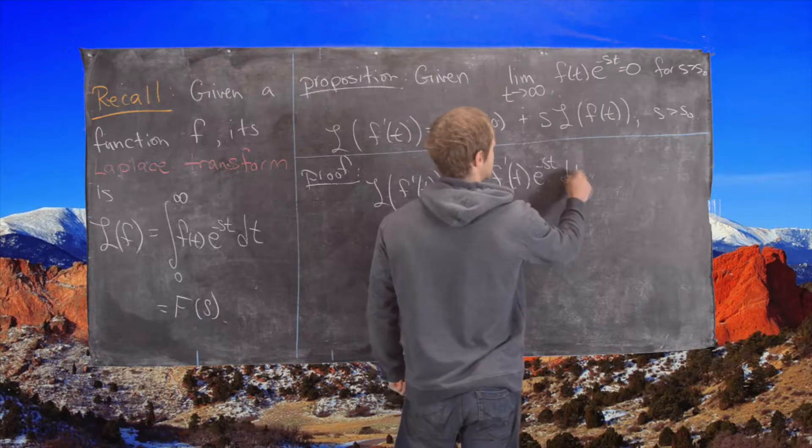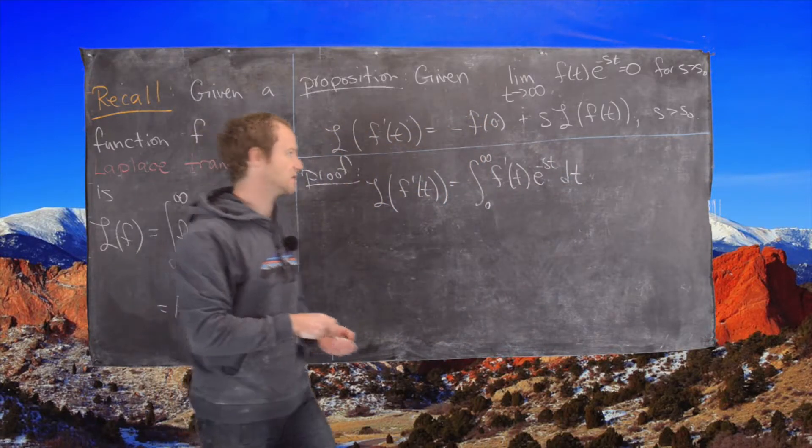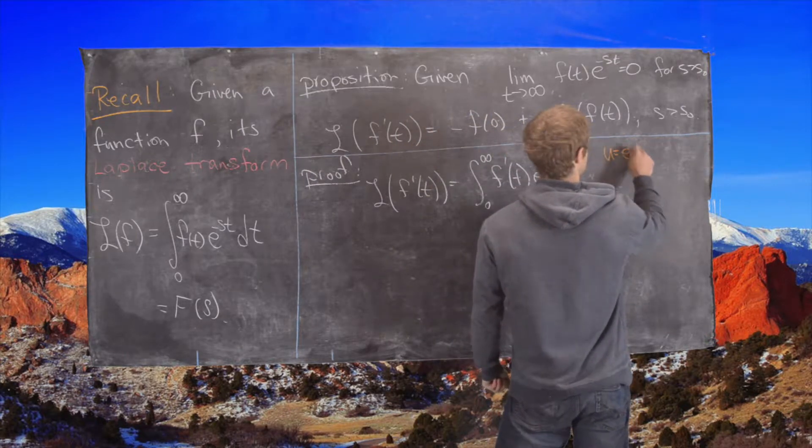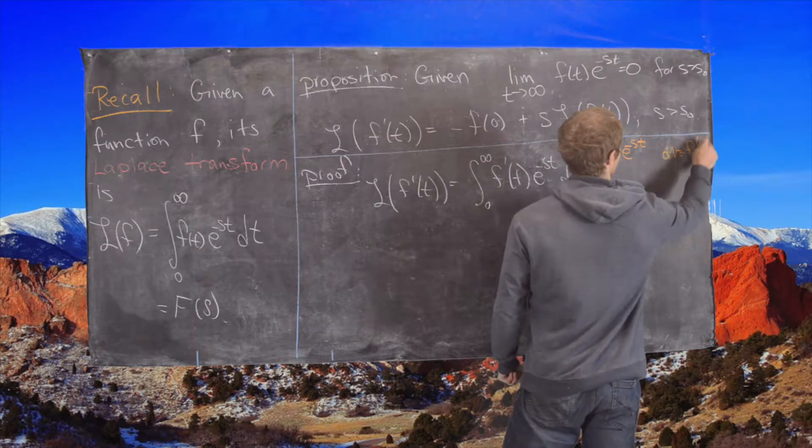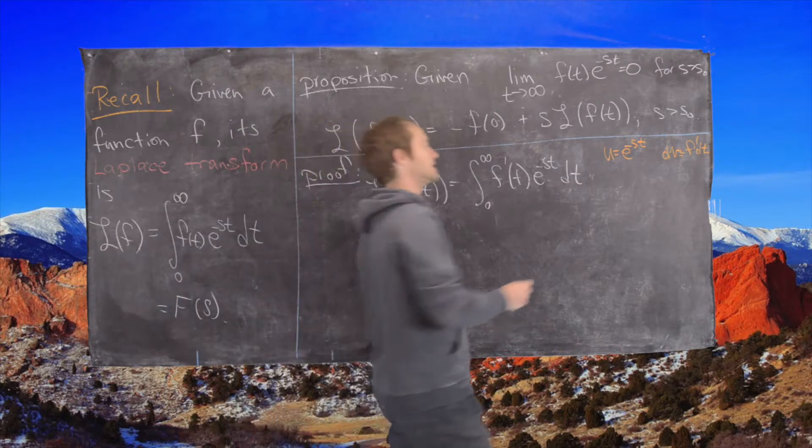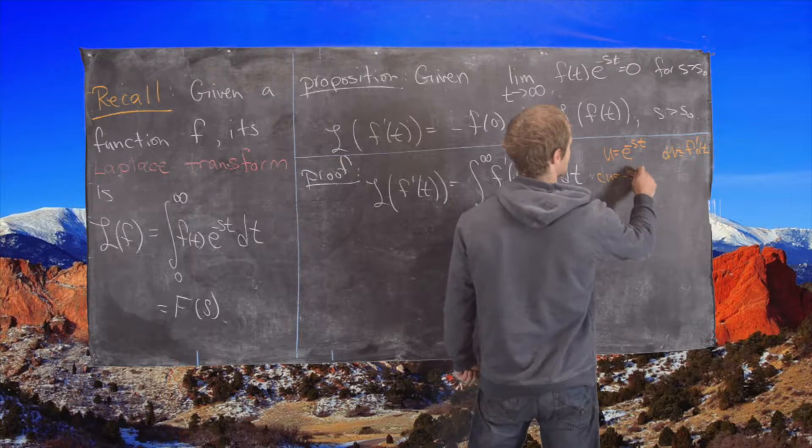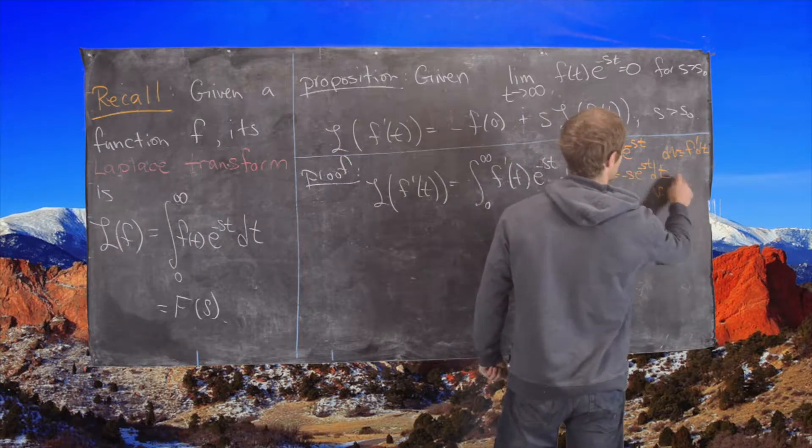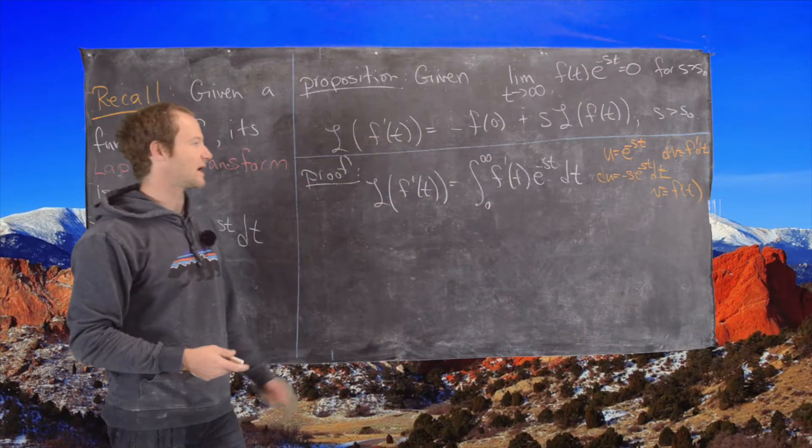And so now we're going to use integration by parts like I alluded to. We're going to take u equal to e^(-st) and we're going to take dv equal to f' dt. Great, but now notice that's going to make du equal to -se^(-st)dt and that's going to make v equal to f(t).